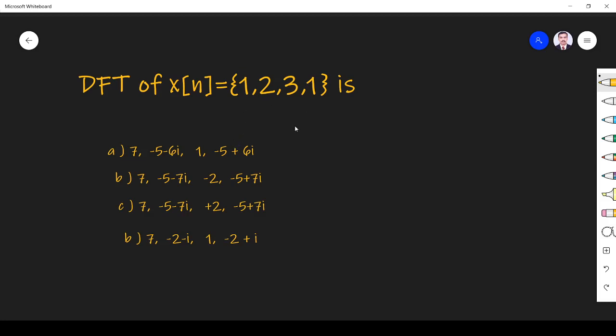We know how to find a shortcut for X(0) already. Simply it is a summation of all samples, so it will give 1 plus 2 is 3, plus 3 is 6, plus 1 is 7.